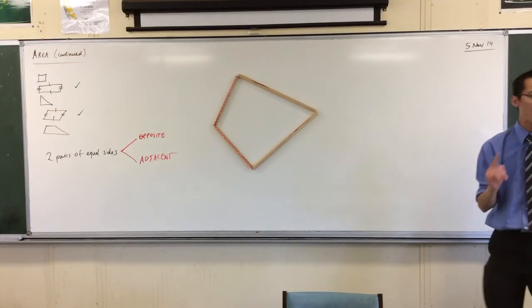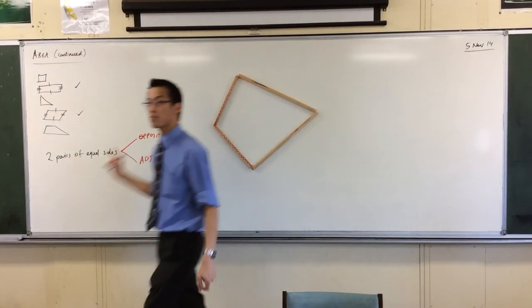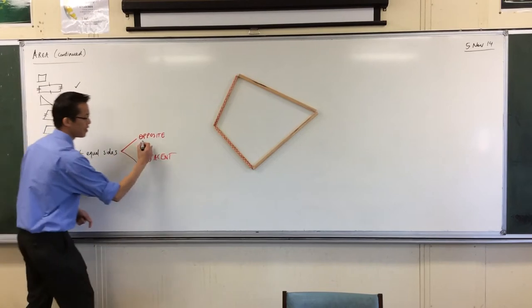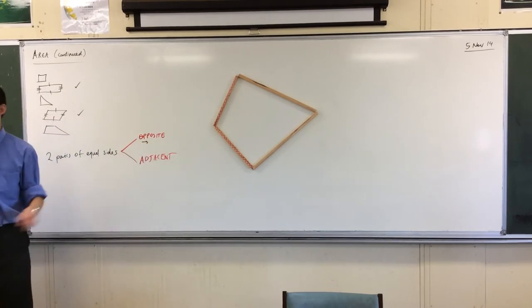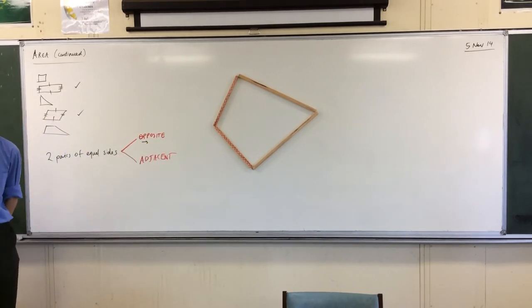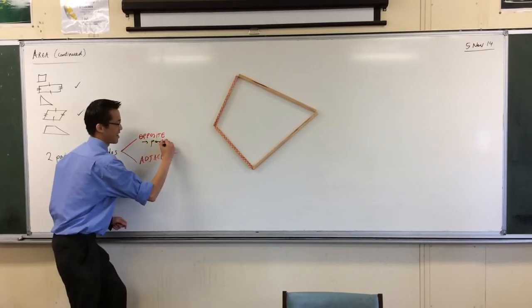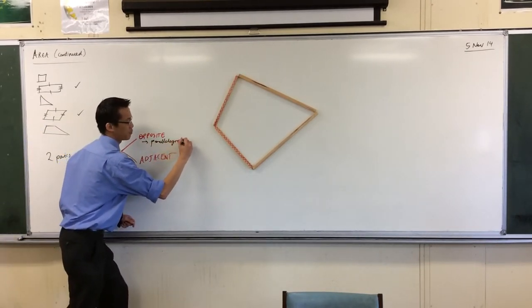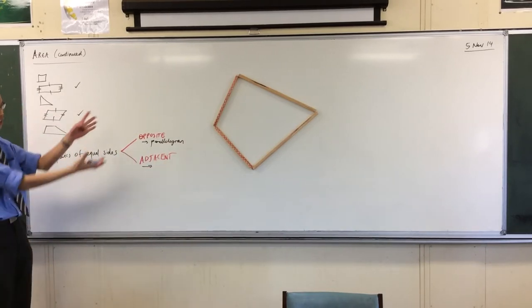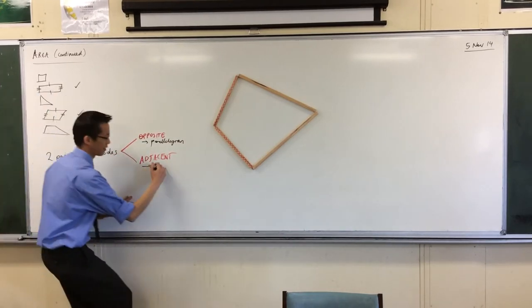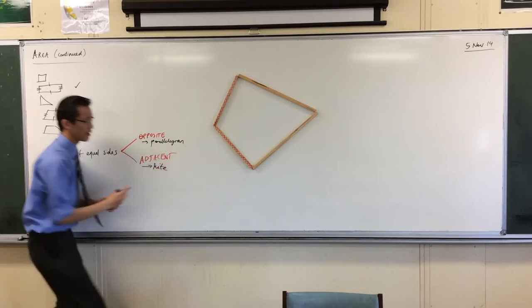If you've got two pairs of equal sides and you place them opposite to each other, then you get... Listen people. If you place them opposite to each other, you get a parallelogram. And if you place them adjacent to each other, then lo and behold, you get a kite.